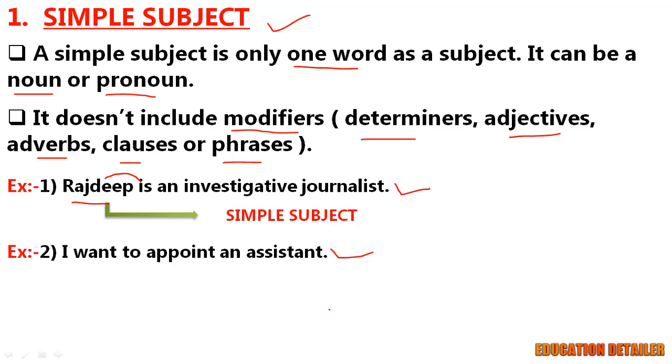Move on to the next example: I want to appoint an assistant. You can also find the subject by identifying the verb first. Here the verb is want. And now ask: who want? I want. I is only one word, so it is the simple subject here.